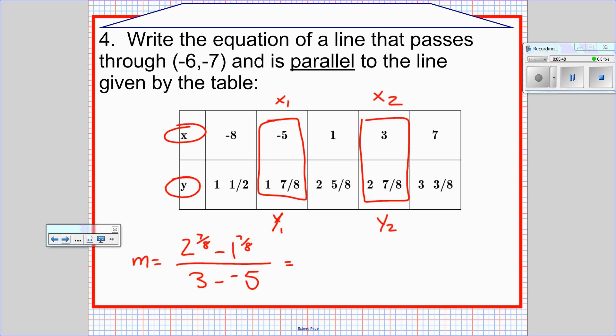2 and 7 eighths minus 1 and 7 eighths is just 1. So I've got 1 over 8 as my slope. Now that I know that, I get to completely forget about my table. My table is done. So I'm going to write the equation that has a slope of 1 eighth and the point negative 6, negative 7. That looks like this: y equals 1 eighth times x plus 6 minus 7.